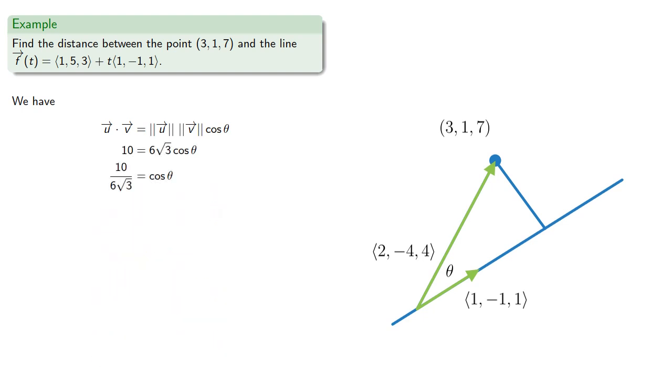Now if we look at our triangle, we note that the distance satisfies the length of the hypotenuse times the sine of theta. If only there was... Oh yeah, we know how to find the sine of theta from the cosine. And so we get...